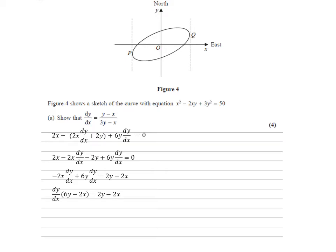We end up with dy by dx times 6y minus 2x. Divide by 6y minus 2x - we're almost there. Now if we just halve top and bottom of the fraction, there is our answer.